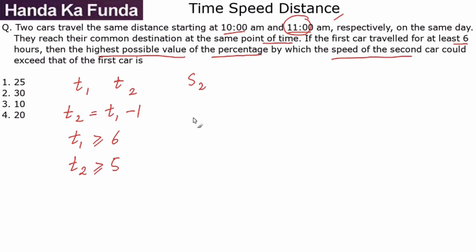Let me try and find out the ratio of s₂ by s₁. Suppose this comes out as 1.5—that would mean the speed of car 2 was 50% higher than speed of car 1. If this comes out as 1.7, that would mean speed of car 2 was higher than speed of car 1 by 70%.